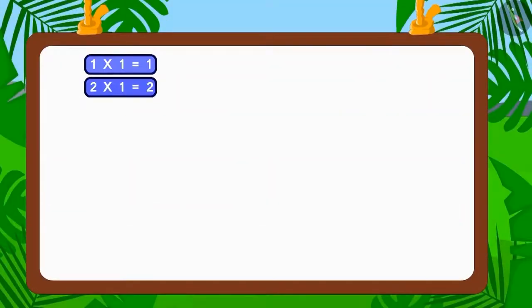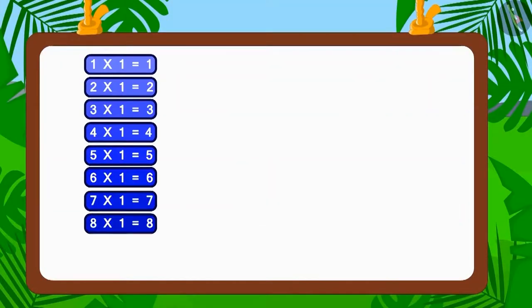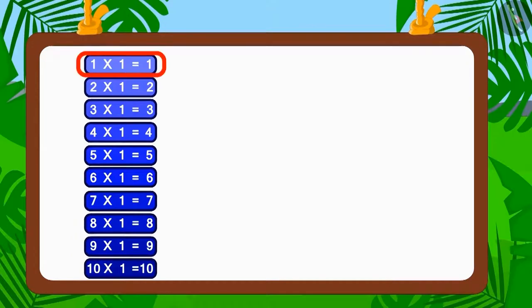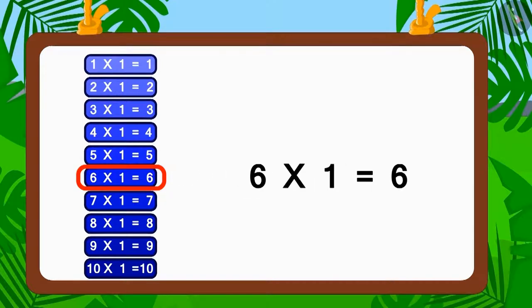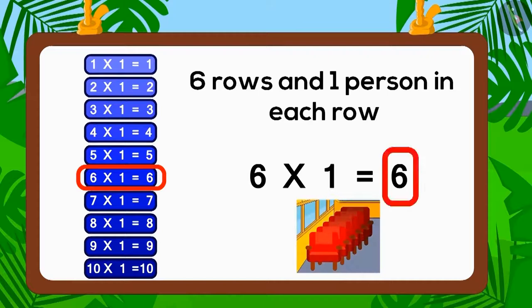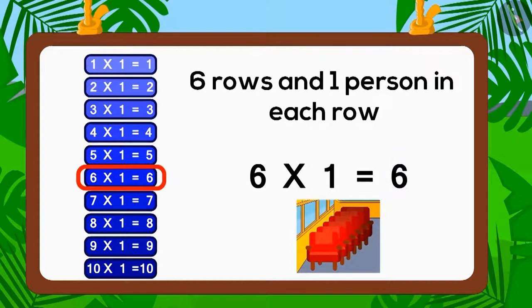Let's start with the table of one. Does number six appear in the table of one? Yes, six multiplied by one is six. Therefore, six people can sit in this bus in six rows with one person sitting in each row.